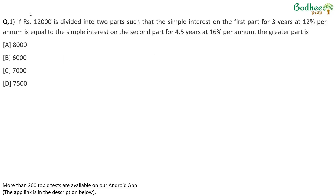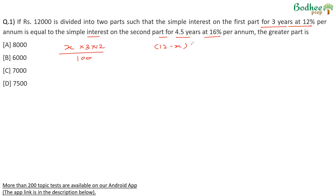Question number one: if 12,000 is divided into two parts such that the simple interest on the first part for three years at 12% is equal to the simple interest on the second part for 4.5 years at 16% per annum. Suppose one of the parts is x; the other part is 12,000 minus x. On x, we get simple interest for three years at 12%, so principle × rate × time ÷ 100.